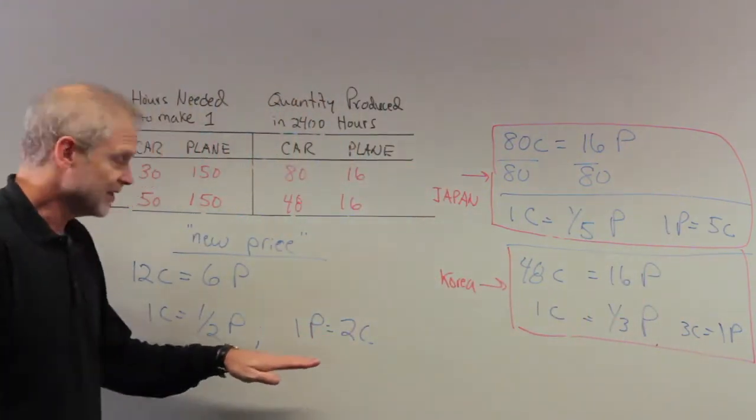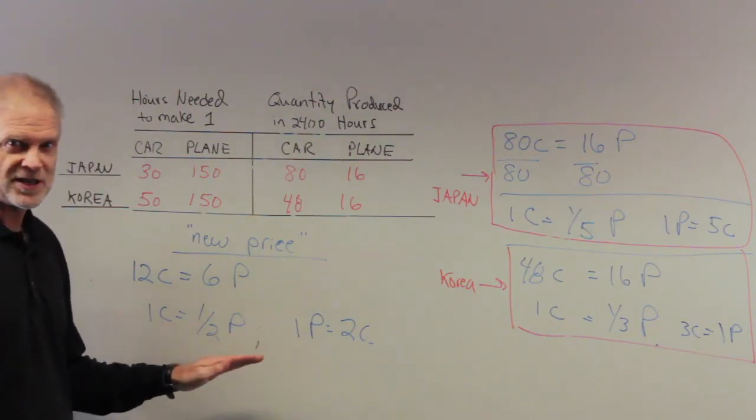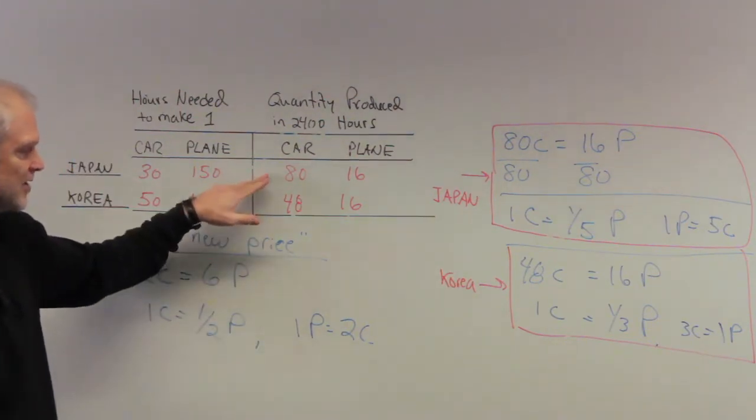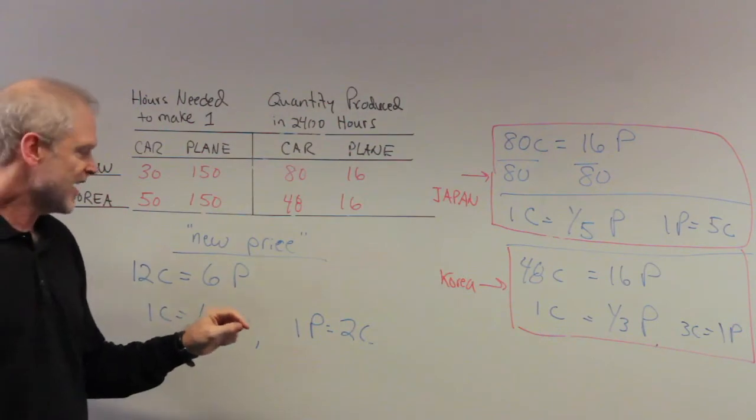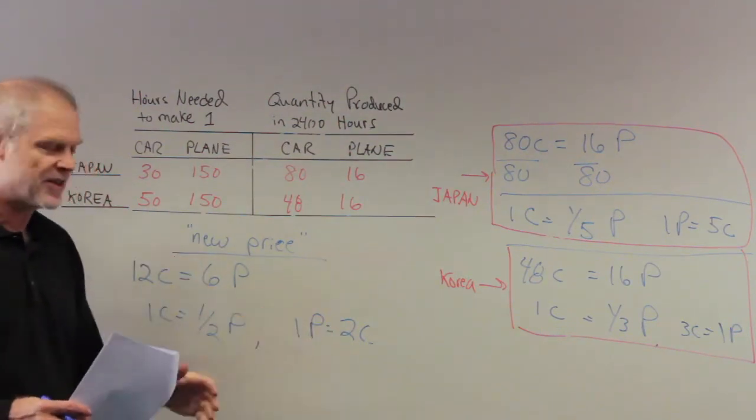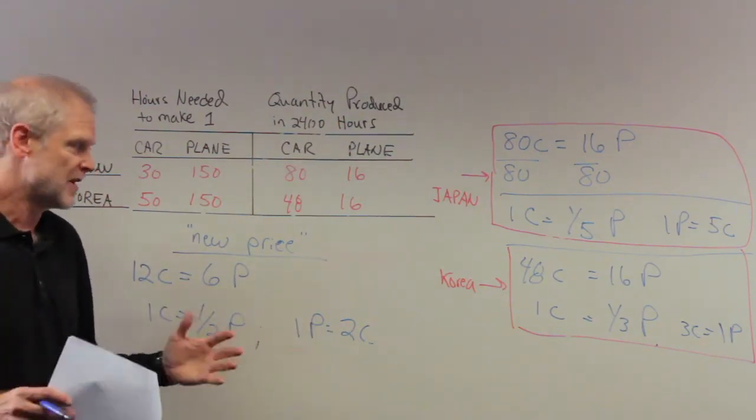So Japan loves these prices. These are very good prices for Japan because they've specialized in cars, and now cars have become much more valuable in terms of they can buy more planes.